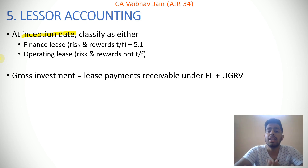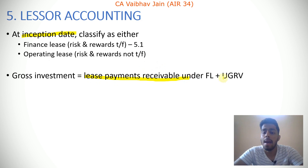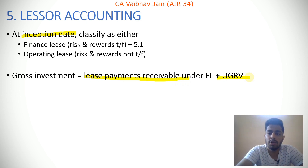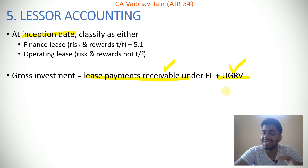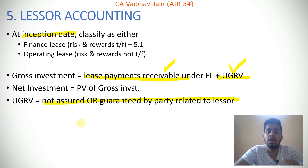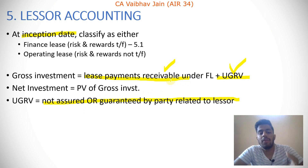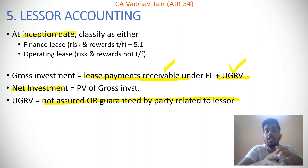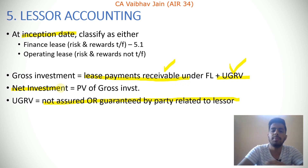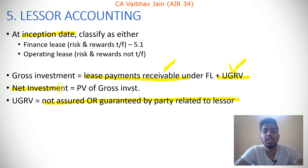Under a finance lease in the lessor's books, the lessor recognizes gross investment and net investment. Gross investment equals the lease payments receivable under the finance lease plus the unguaranteed residual value. Net investment is the present value of the gross investment discounted at the interest rate implicit. The net investment is shown as an asset in the lessor's books under the finance lease.